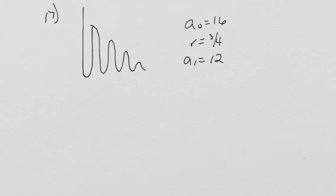So what are we given? We were given R's 3 fourths, we were given A of 0, 16, and we can use that to find A of 1.